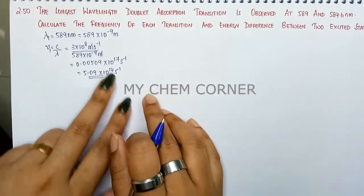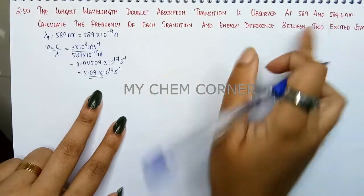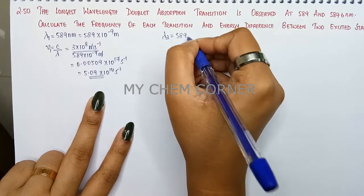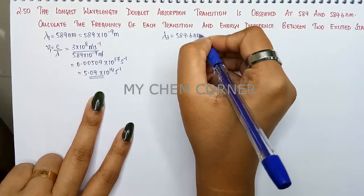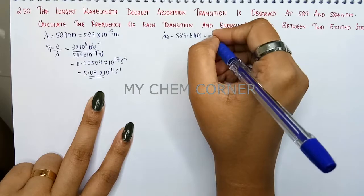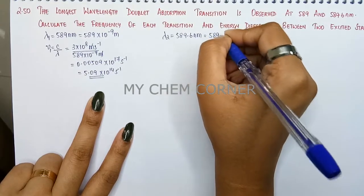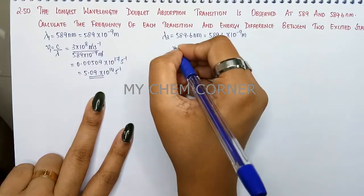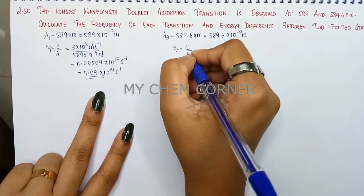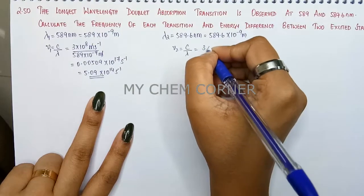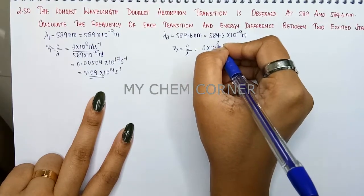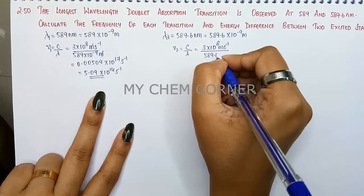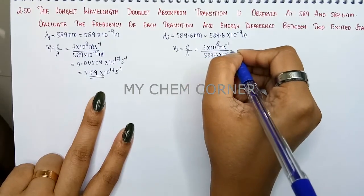Now we need to calculate the same way for the second wavelength. Lambda 2 equals 589.6 nanometer, which equals 589.6 into 10 to the power minus 9 meter. Now we are going to calculate the second frequency c by lambda. c is 3 into 10 to the power 8 meter per second divided by 589.6 into 10 to the power minus 9 meter.